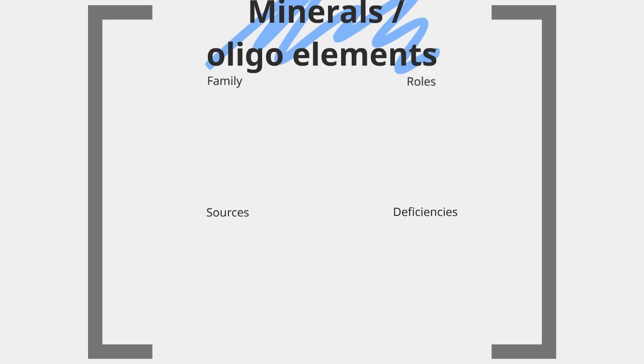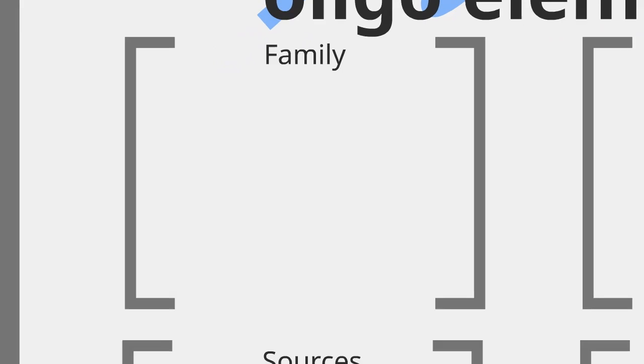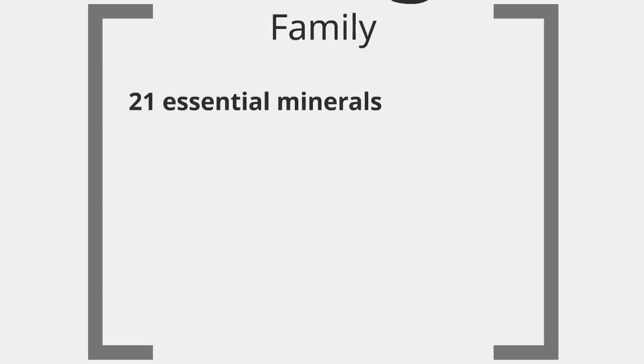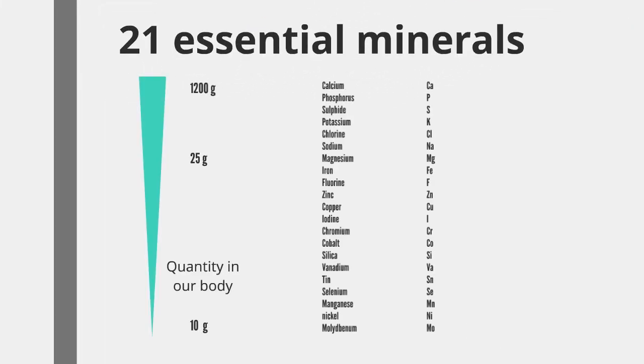More than organic materials, food provides many mineral materials, among which around 20 are essential in humans. The amounts of minerals in the organism are variable. Around 1 kg of calcium or phosphorus, a few grams of iron or fluorine, and less than 1 mg of chromium or cobalt.